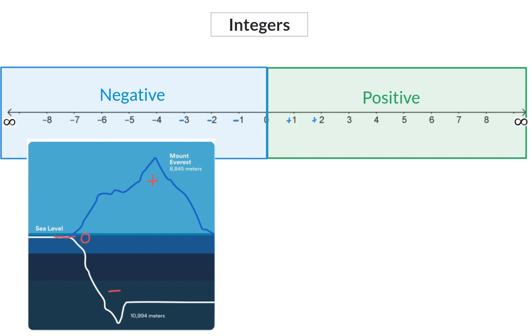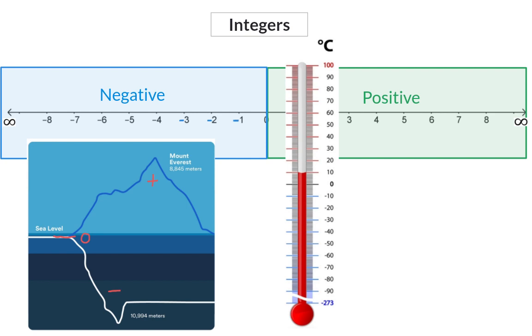Another example will be temperatures. A temperature of zero degrees Celsius is where water freezes. Anything warmer than this will be a positive temperature, and anything that's even colder will be negative.